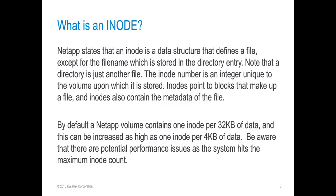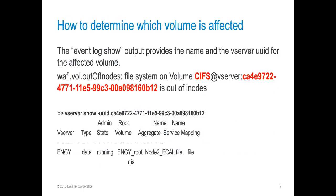So how do we determine which volume is affected? To find out which volume is affected, we go back to the event log show output. The following line will state the volume name and the UUID of the storage virtual machine. We determine the user-friendly name of the storage virtual machine by running the vserver show command with the UUID. This is useful if you've received the alert, and some environments will have similarly named volumes spread across multiple vservers, so this will allow you to determine which vserver contains the volume you're looking for.